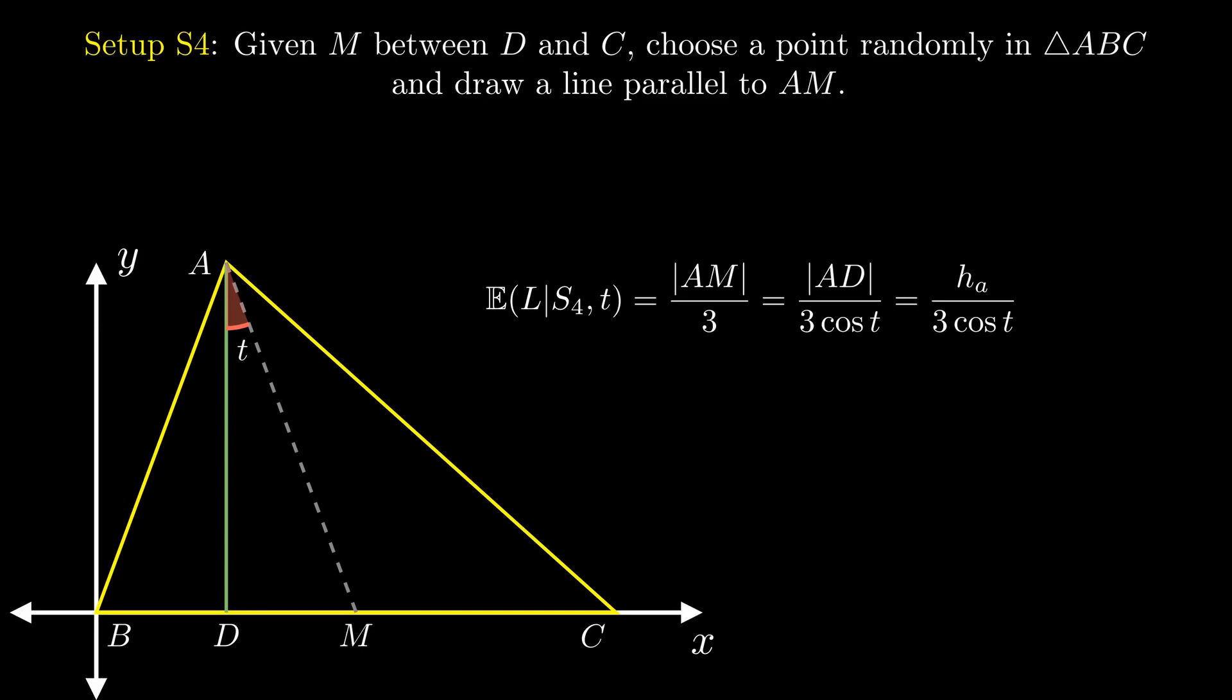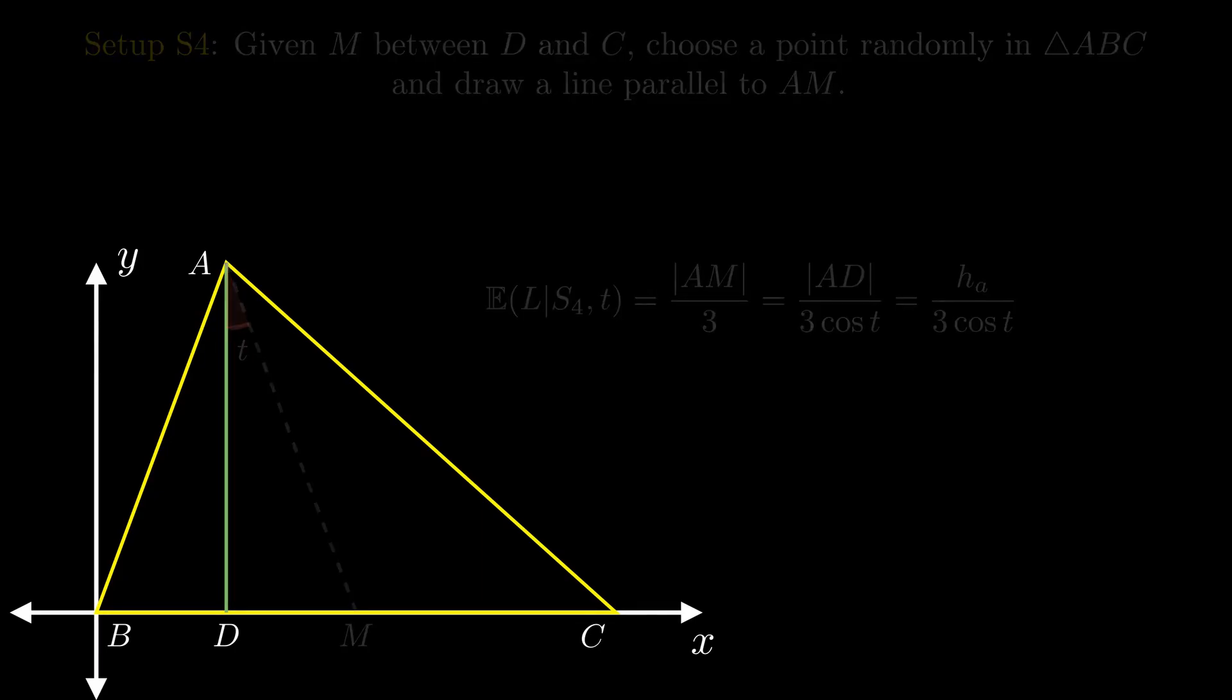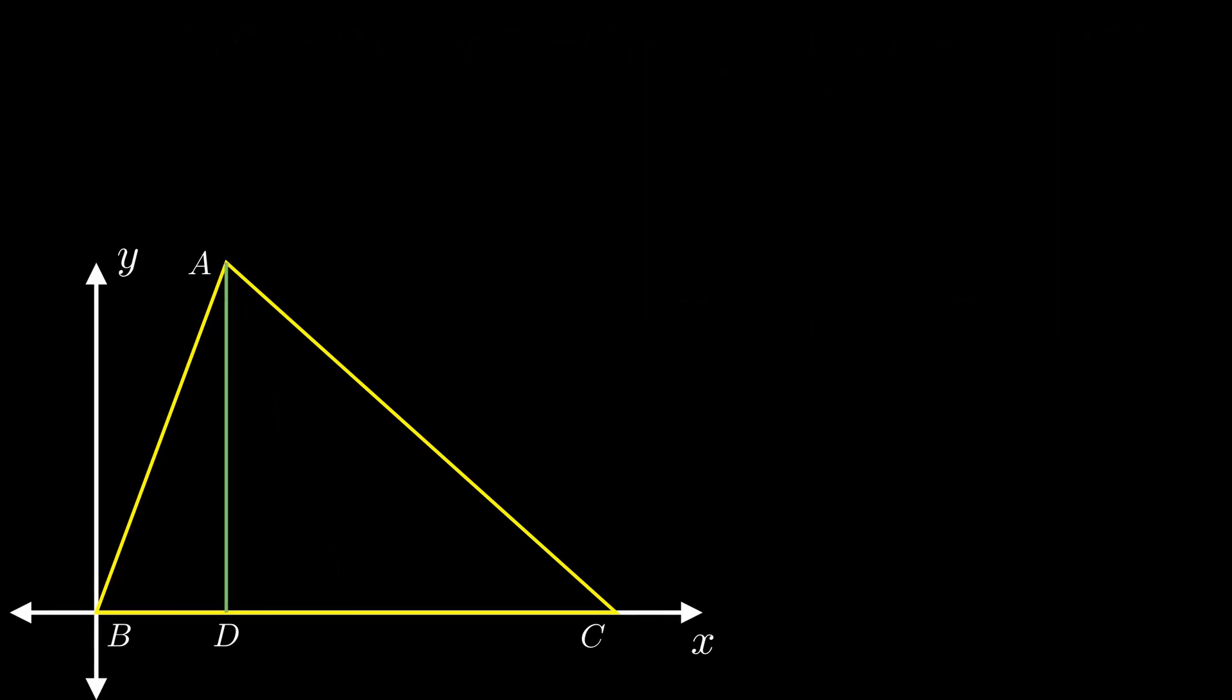We have made some good progress here. We now know that the expected length of a line drawn by picking a point randomly in a triangle and parallel to a given line AM is a third of the length of AM. In case you feel a little fuzzy about the details, now is a good time to pause the video and ponder over our discussion so far.